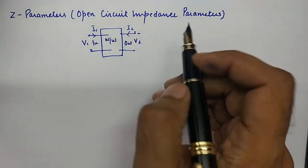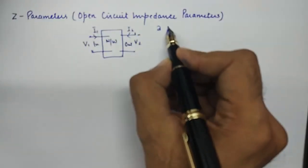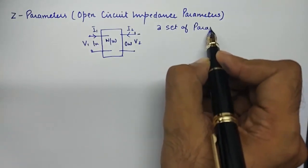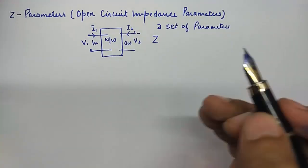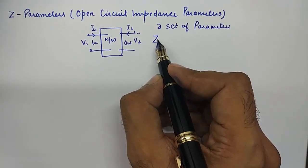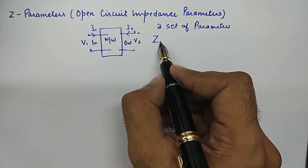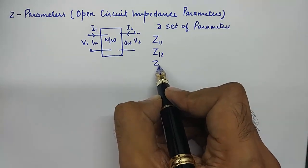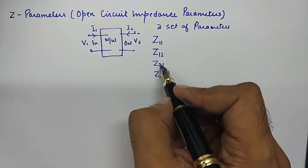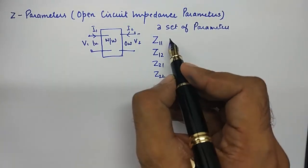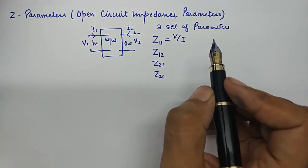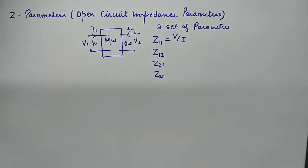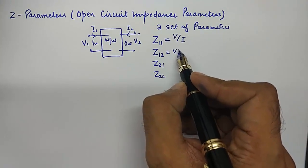Z-Parameters are going to be a set of impedance parameters. We will have a set of parameters, for example: Z11, Z12, Z21, and Z22. All these parameters are impedances, so they will be ratios of V upon I. That's the first thing we need to understand — all these Z-Parameters that we are going to find and define will be ratios of V upon I.